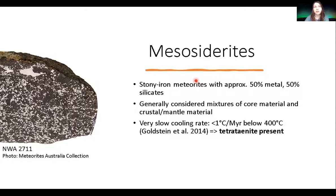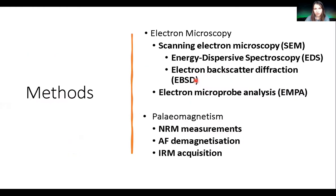Because mesosiderites have a relatively poorly understood history and because tetrataenite is present, we thought we would apply several experimental techniques to compare them and see which one is best for identifying single-domain tetrataenite. The methods used so far include scanning electron microscopy with EDS and EBSD, as well as some limited chemical analysis with the electron microprobe, and some bulk magnetic measurements.